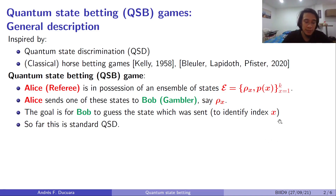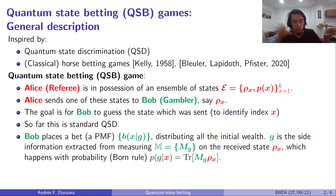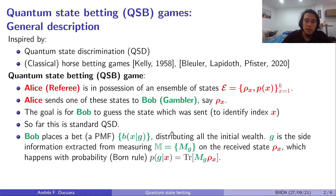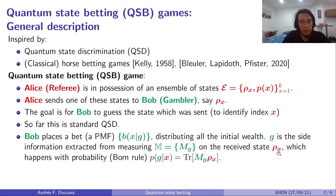So far, this is basically a standard quantum state discrimination. But now, we're going to allow Bob to place a bet across all of the possible options, represented by a probability mass function b of x given g, with which he's going to be distributing a certain initial wealth. Here, g is the side information that he's going to use to place that bet, and the one he's going to obtain from measuring a POVM m on the received state row x.